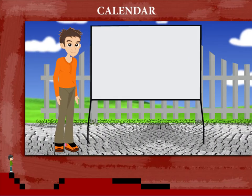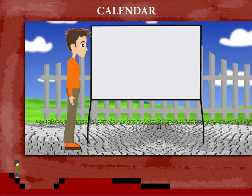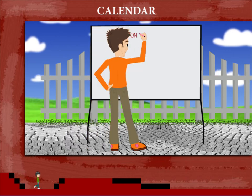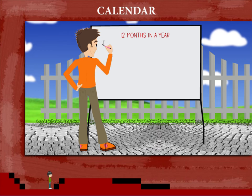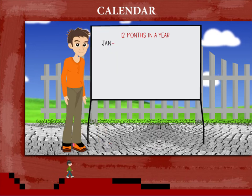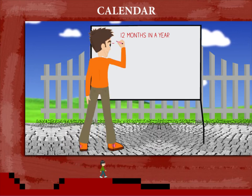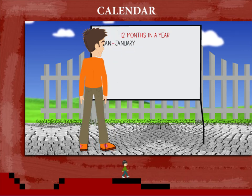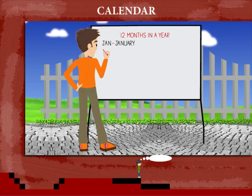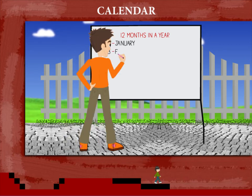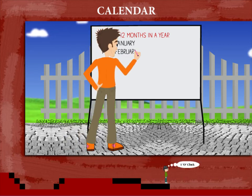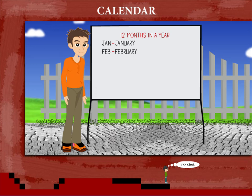Snooty stands to tell us about the calendar. There are 12 months in a year. Jan is the short form for January, the first month. Feb is the short form for February, the second month.